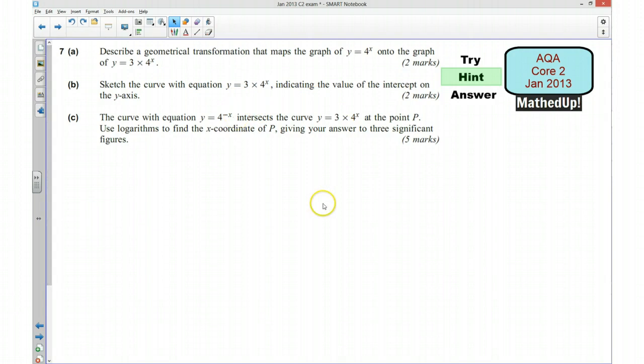Part C, this time we've got the curve with equation y equals 4 to the negative x, and that intersects with the curve y equals 3 times 4 to the x at this point P. We're asked to use logarithms to find the x coordinate of P and give our answer to 3 significant figures.